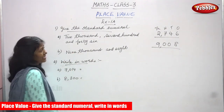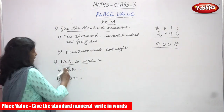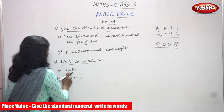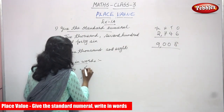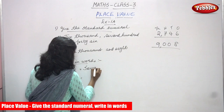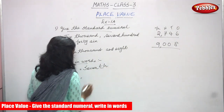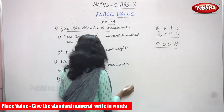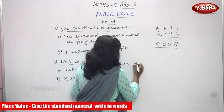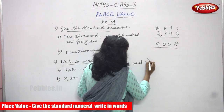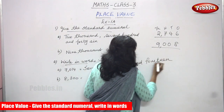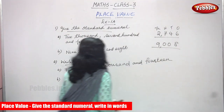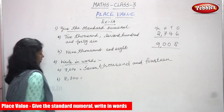This is the right answer. I converted the word form into numeral form — this is the exact standard numeral. Now they've given the numeral form and you have to write in words. So 7014: you have to write in word form — 'seven thousand' (s-e-v-e-n t-h-o-u-s-a-n-d) and 'fourteen' (f-o-u-r-t-e-e-n). Seven thousand and fourteen — that is the right answer.